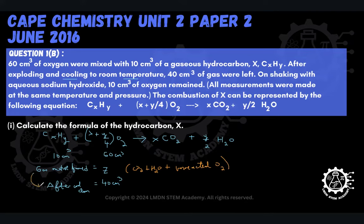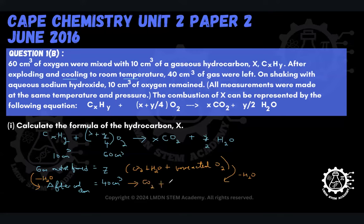When we cool down and condense, we're essentially taking the steam out of the mixture. So if we take out the steam by condensation, we're left with the 40 cm³ that they told us remained after cooling — and that 40 cm³ consists of carbon dioxide and any unreacted oxygen.